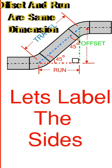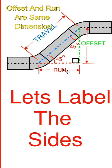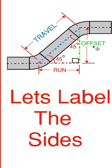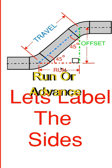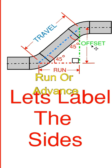In this 45-degree set, the offset and the run are the same dimension. The offset is the green line and is always opposite the angle of turn. The run equals the offset. Sometimes the run is called the advance.